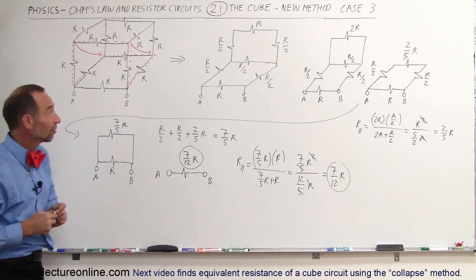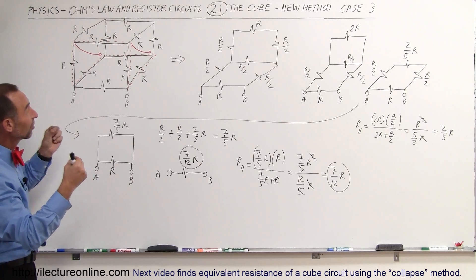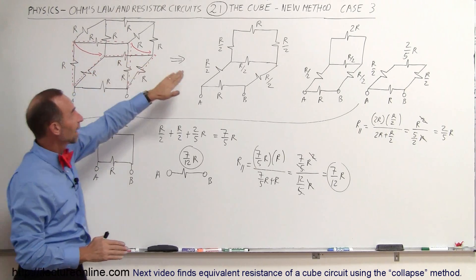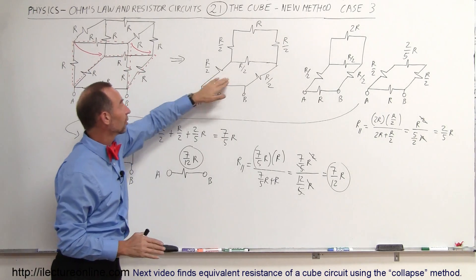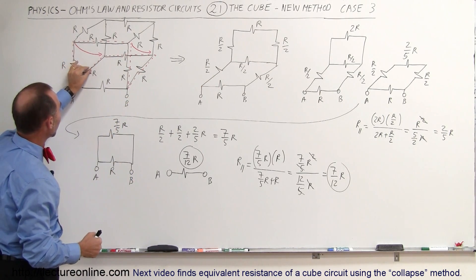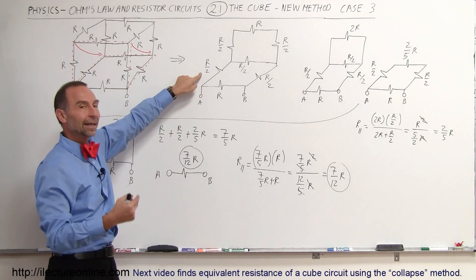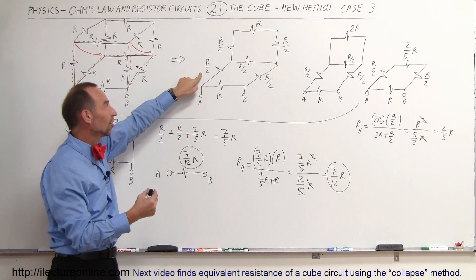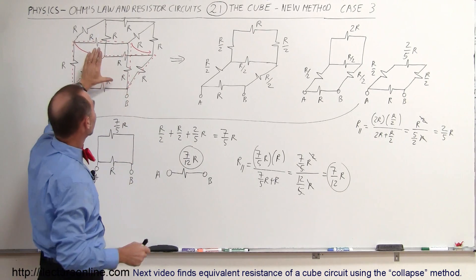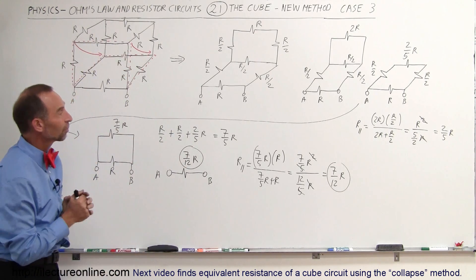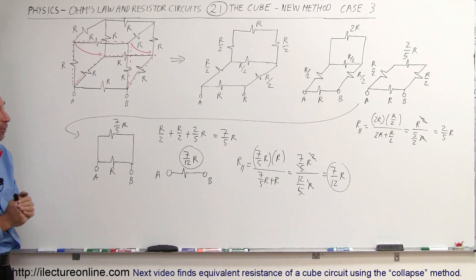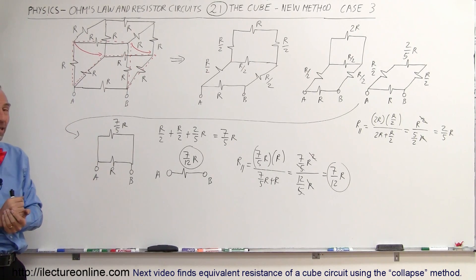The technique is very straightforward: you recognize the symmetry and collapse the 3D cubic circuit into a flat 2D circuit. Wherever two resistors collapse together, you get their equivalent parallel resistance — in this case R²/2R, which is R/2. You apply that for each pair of collapsed resistors, then solve the resulting series and parallel combinations. That's how you find the equivalent resistance — pretty slick technique!